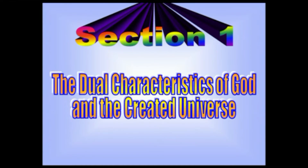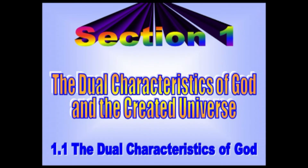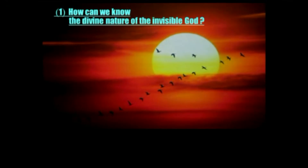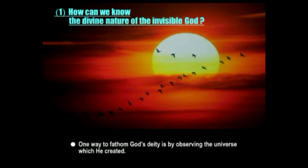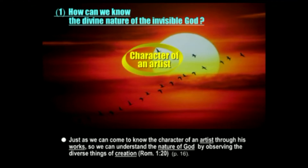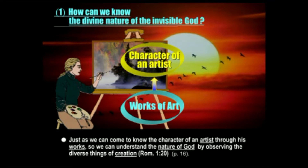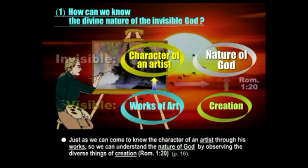The next section of the Unification Principle is called the Dual Characteristics of God and the Created Universe. The challenge is, since God is invisible, how can we know the divine nature of this invisible God? It's not something that we could measure. One way to understand God's nature and deity is by observing the universe, the things that God created. Just as we can come to know the character of an artist by looking at the works of that artist, so we can also understand the nature of God by observing all the different things of creation.